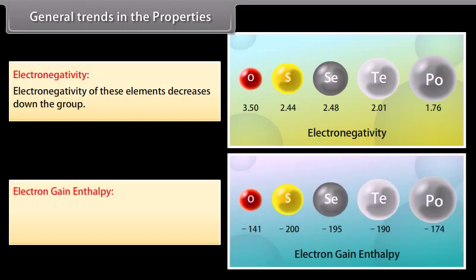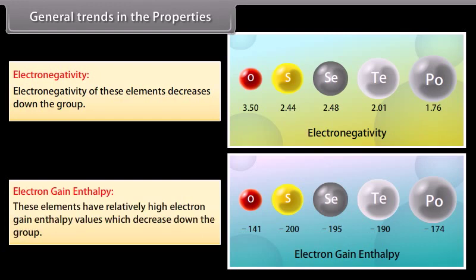Electron gain enthalpy: These elements have relatively high electron gain enthalpy values which decrease down the group.